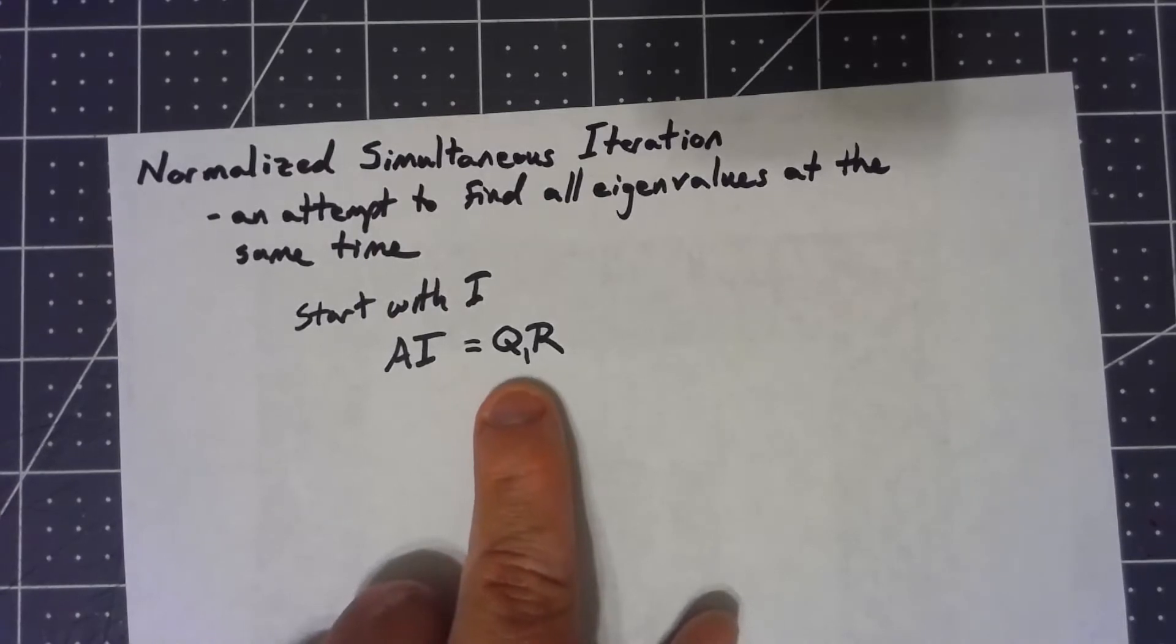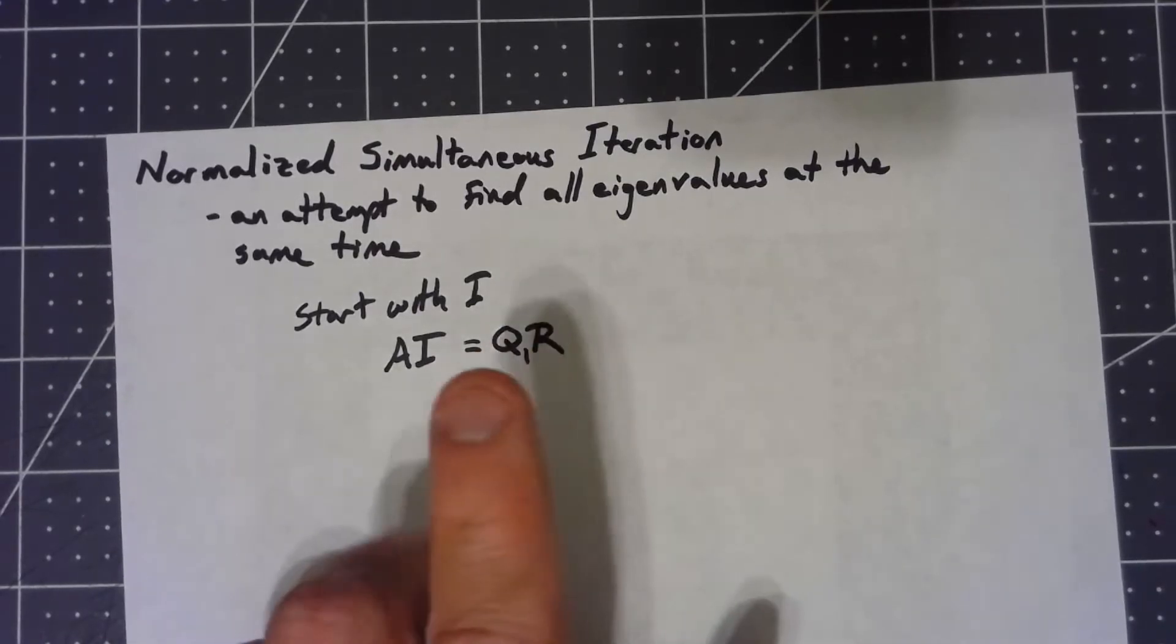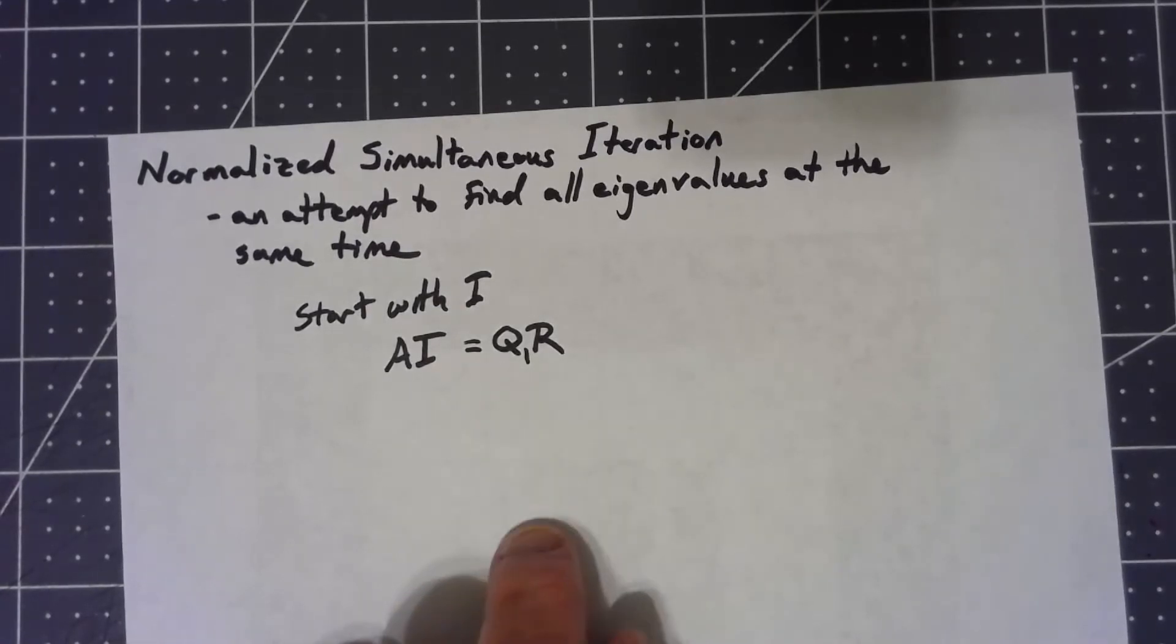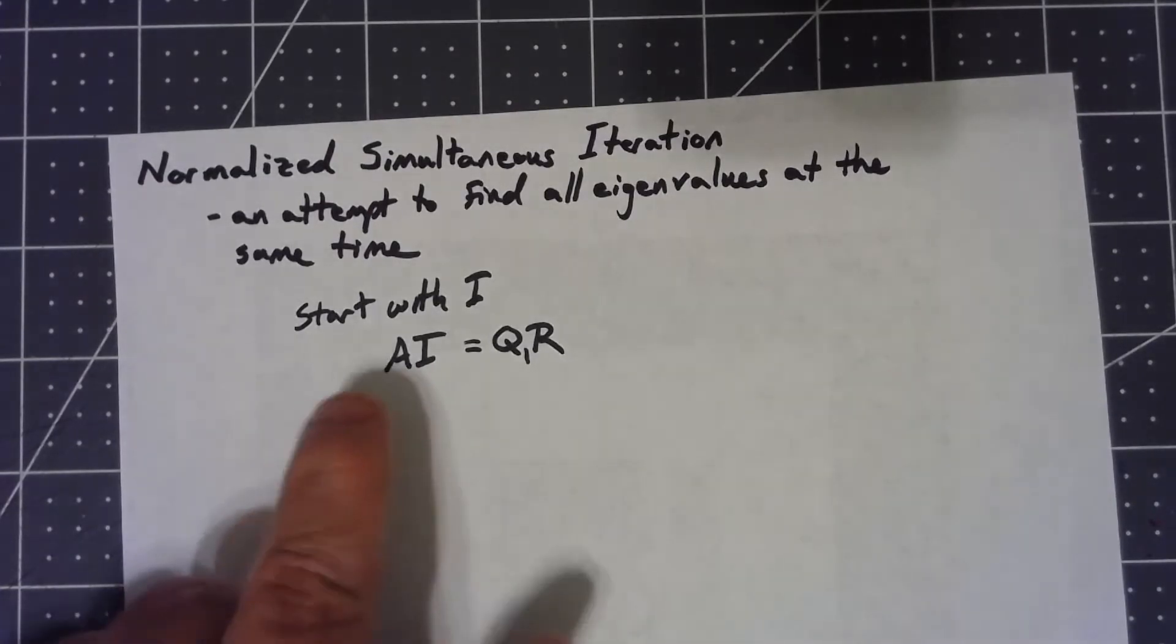But the basics are that Q is an orthonormal matrix and R is an upper triangular matrix. As we go through this, basically, we're going to keep getting a sequence of these orthonormal matrices and the hope, again, under the right conditions, these Qs converge to the eigenvectors. The different columns of Q are the different eigenvectors of A.